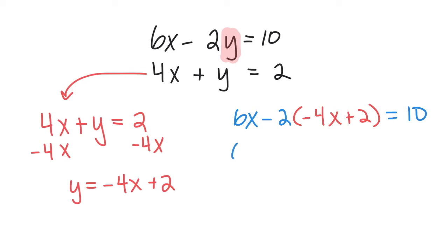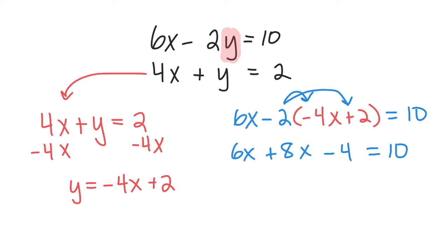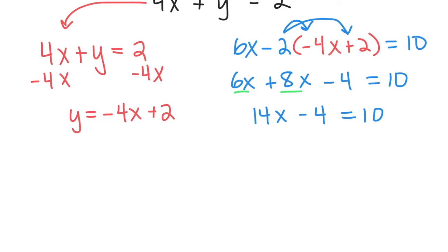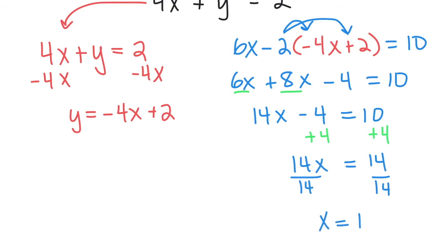First, distribute: the 6x stays the same, but negative 2 gets multiplied in. Negative 2 times negative 4 is positive 8x, and negative 2 times positive 2 is negative 4, equals 10. Combining like terms gives 14x minus 4 equals 10. Adding 4 to both sides gives 14x equals 14, then dividing both sides by 14 gives x equals 1.